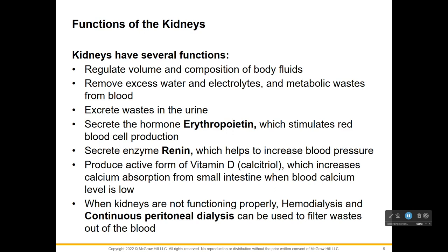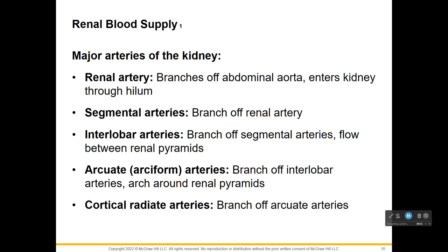The kidneys regulate volume and composition of body fluids, removing excess water, electrolytes, and waste from blood, which gets excreted in urine. They secrete the hormone erythropoietin, which stimulates red blood cell production in red bone marrow. They also secrete an enzyme called renin, which helps increase blood pressure, and they produce an active form of vitamin D that increases calcium absorption in the small intestines when blood calcium is low. If not functioning properly, hemodialysis or continuous peritoneal dialysis can be used to filter waste from the blood.